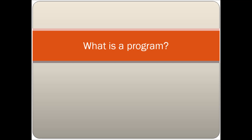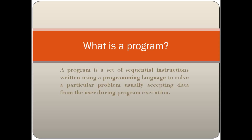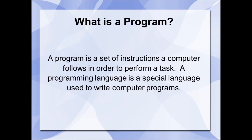Let us start with a question: what is a program? You may get different answers like it's a set of instructions or a collection of software. A program is a set of sequential instructions written using a programming language to solve a particular problem, usually accepting data during execution. Another definition says a program is a set of instructions a computer follows to perform a task. A programming language is a special language used to write computer programs.